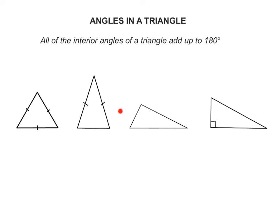Now, irrespective of what type of triangle it is, all the interior angles of a triangle add up to 180 degrees. So for this equilateral triangle, all of the interior angles will add up to 180 degrees. The same applies to the isosceles triangle, the scalene triangle, and the right-angled triangle.